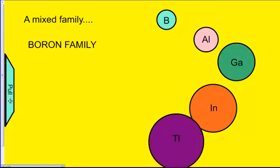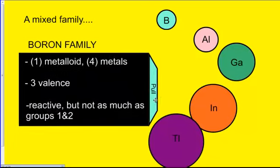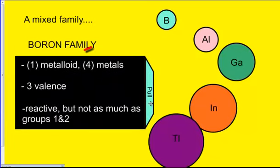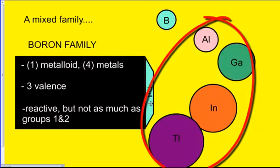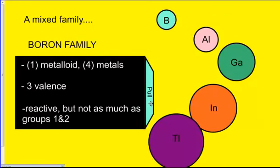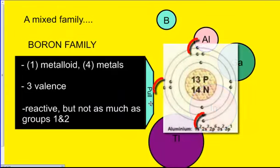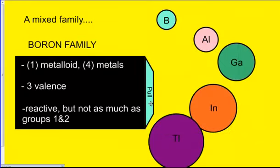In the boron family the characteristics are they have one metalloid which is actually boron. And then four metals below that. Aluminum is on the zigzag but remember aluminum is a metal. In the boron family they have three valence. So it makes them reactive but not as much as group 1 and 2.